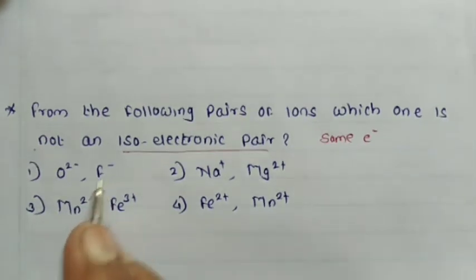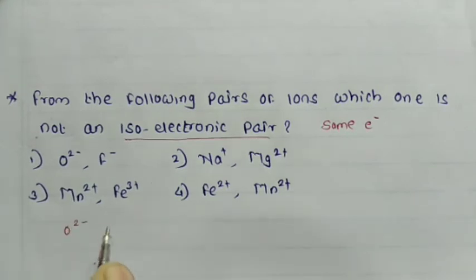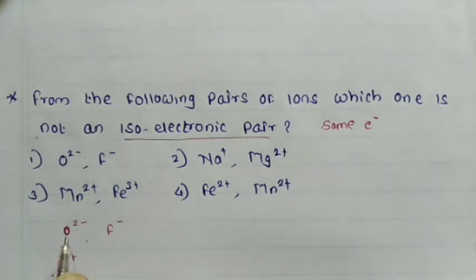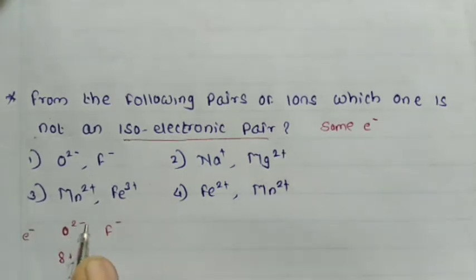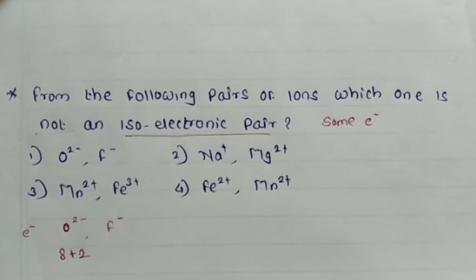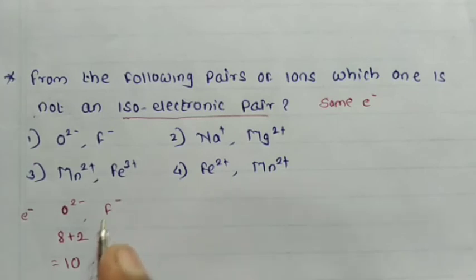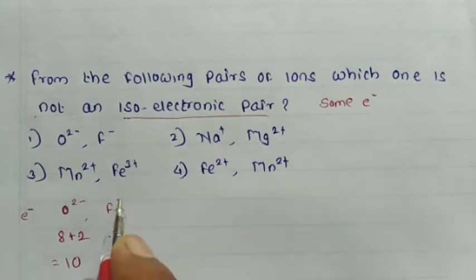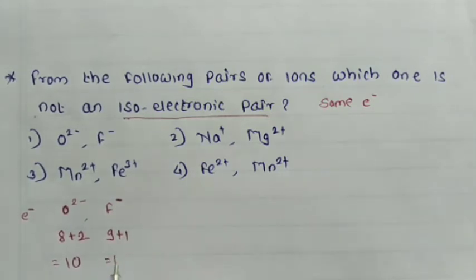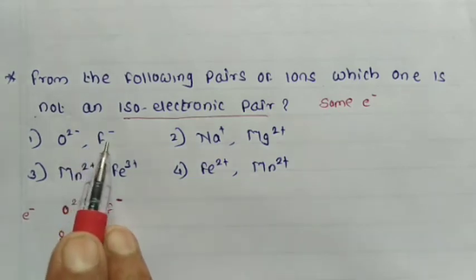See pair 1: O²⁻ and F⁻. Atomic number of oxygen is 8, so oxygen has 8 electrons. O²⁻ has 2 extra electrons added, giving a total of 10 electrons. Atomic number of fluorine is 9, so fluorine has 9 electrons. F⁻ has 1 extra electron added, giving a total of 10 electrons. Both have 10 electrons — this is an isoelectronic pair.